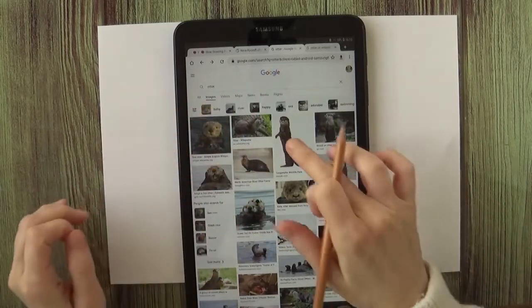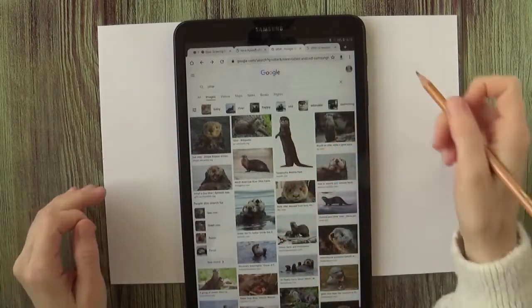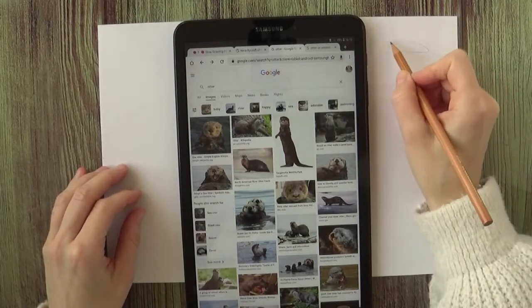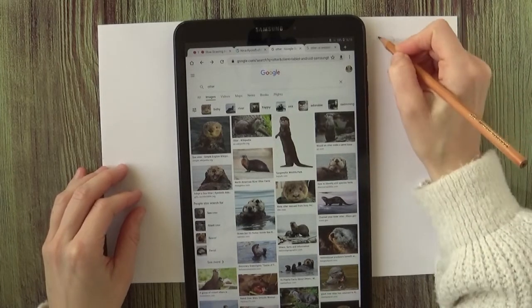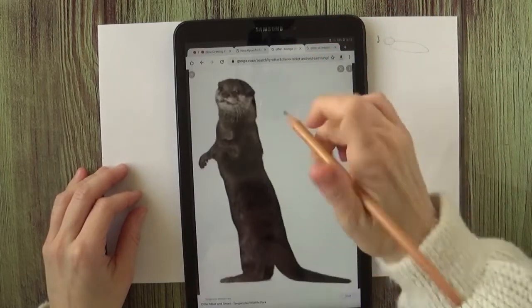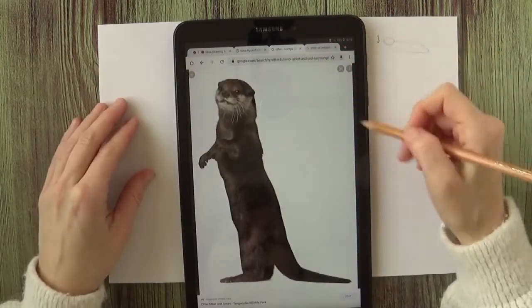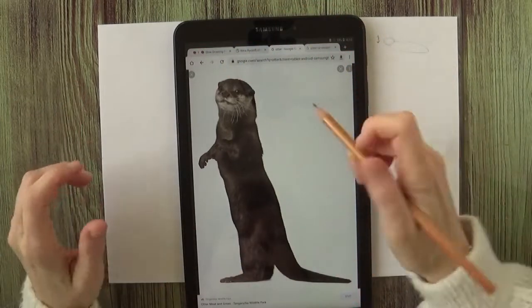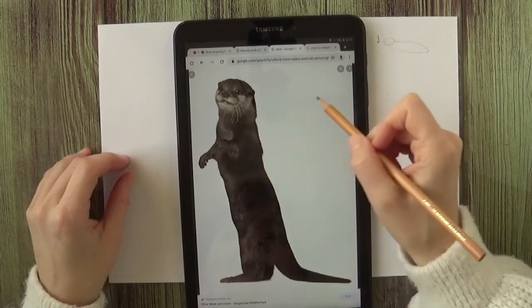And as you can see for the otter, they have a very long body. They have small and kind of vertically squished down head. If you look at it, it's not a big round circle head, it's more like a squashed oval.